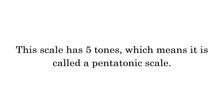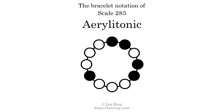This scale has 5 tones, which means it is called a pentatonic scale. This is a bracelet notation diagram of scale 283. The shaded circles represent tones that appear in the scale, and they are read clockwise, starting at the top.